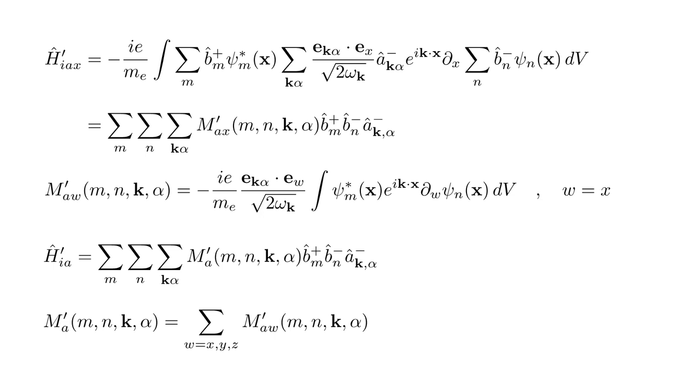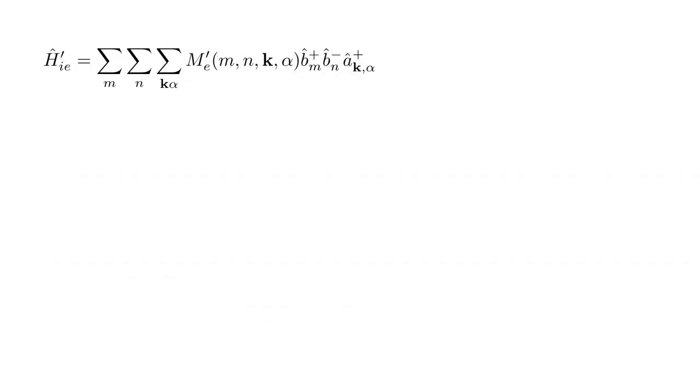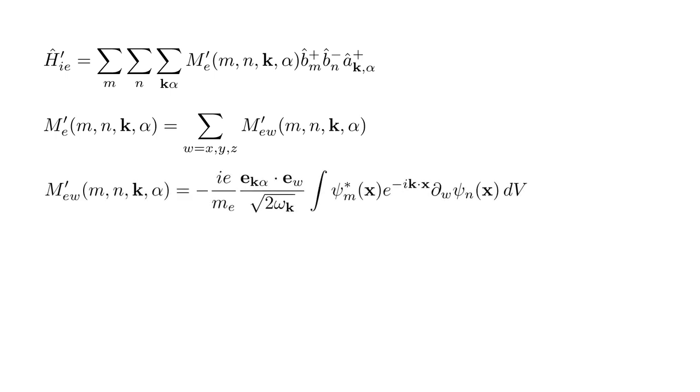If we repeat this process for the y and z operator components and combine the results, we obtain h-hat i a prime, the absorption part of the h-hat i prime operator. Here, the coefficient ma prime is the sum of the ma x prime, ma y prime, and ma z prime coefficients. The same steps, but using the emission part of a-hat, produces h-hat i e prime, the emission part of the h-hat i prime operator. Instead of photon destruction operators, this contains photon creation operators. The coefficient m e prime is also the sum of x, y, and z components. These are the same as for the absorption case, with e to the minus i k dot x in place of e to the i k dot x. The complete h-hat i prime operator is the sum of the emission and absorption parts.